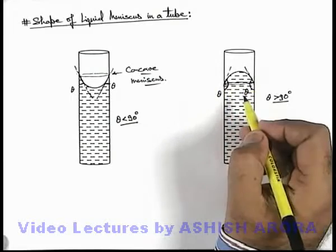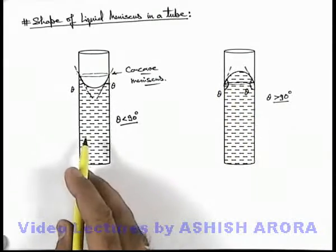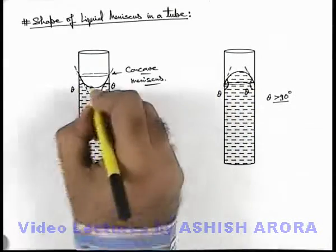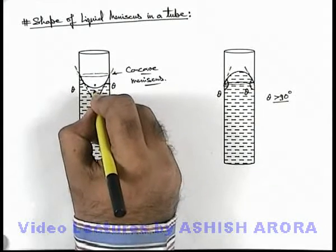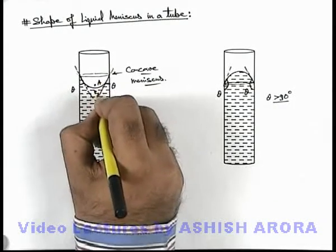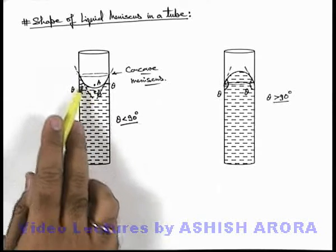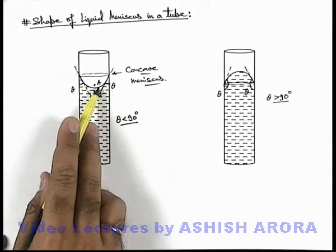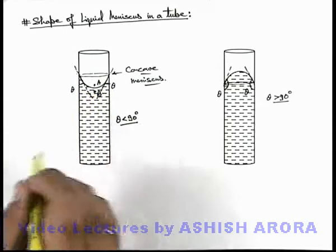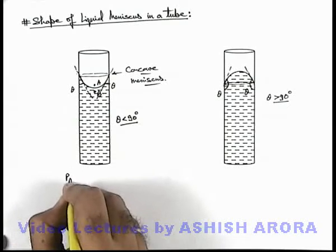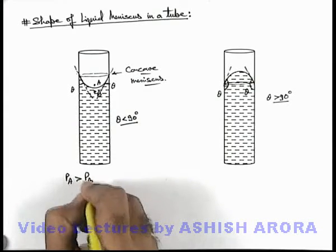In this situation, if we just analyze what is the effect of formation of meniscus, here we can see if just above and below the meniscus, 2 points A and B are taken. Then we can say at point A the surface is having a curvature which is concave. So we can say here pressure at point A is more than pressure at point B.